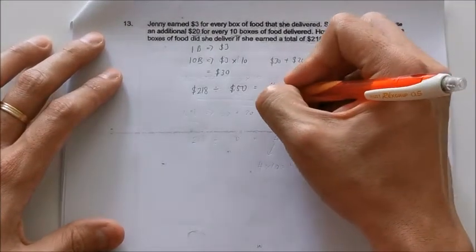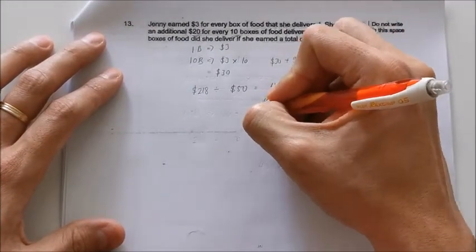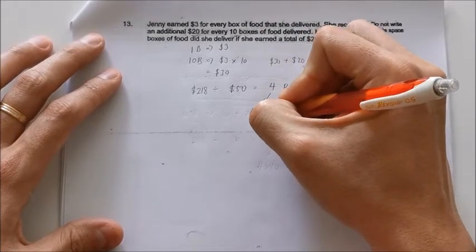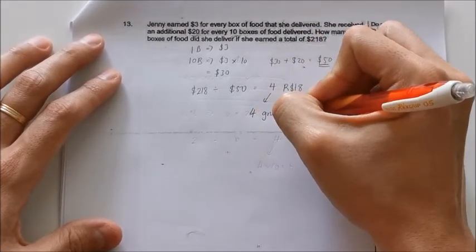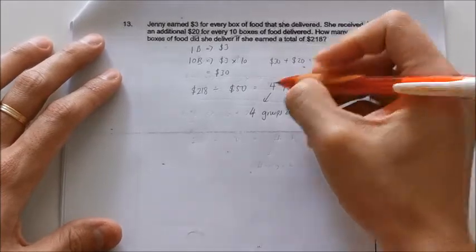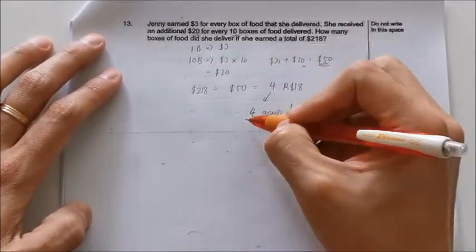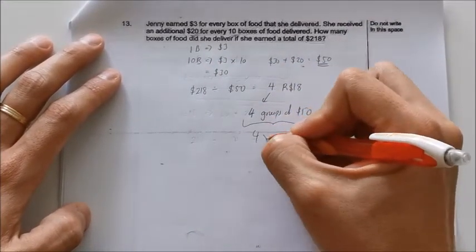So guys, this 4 here means that I have 4 sets of $50, 4 groups of $50. And each $50, I have 10 boxes. So this will give rise to 4 times 10, which is 40 boxes.